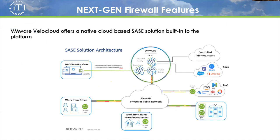The other platform I want to highlight is VMware VeloCloud. Rather than doing the security on the box itself, they have it built into their gateways or controllers — the controllers that manage the SD-WAN devices. They have the same features: anti-malware, SSL decryption, cloud web security, but it's on the controller. So you send traffic to the controllers as you normally would and inspection happens there. Two different methodologies, but they both accomplish the same thing.